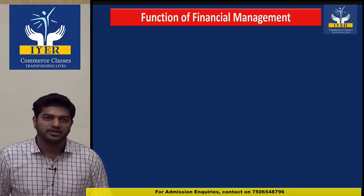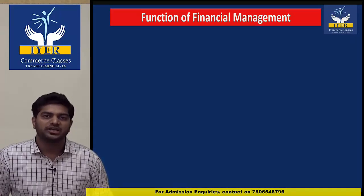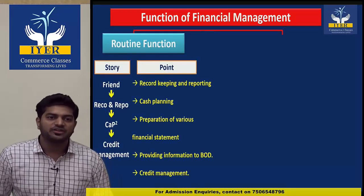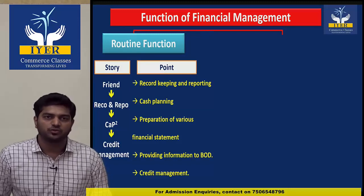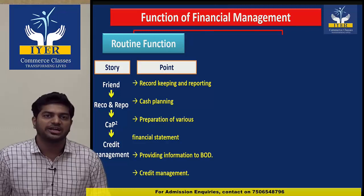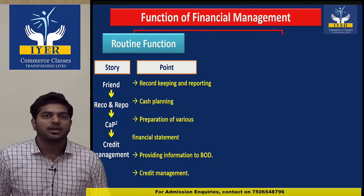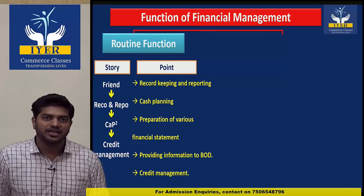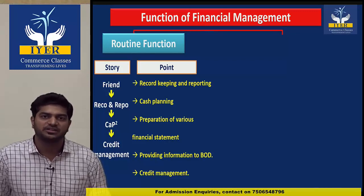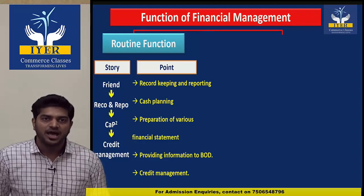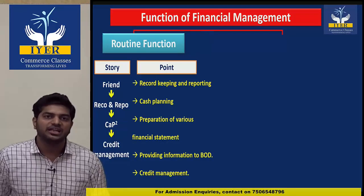Next are the functions of financial management. There are two functions. First is routine function. The story to remember: two friends RECO and REPO had a cap — P squared — and they did credit management work. From RECO and REPO, points are: record keeping and reporting; from CA: cash planning; first point is providing information to board of directors; second is preparation of various financial statements; and last point is credit management. These are routine functions — performed daily by the company.